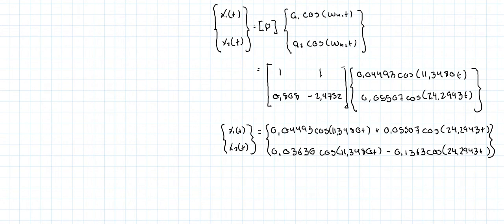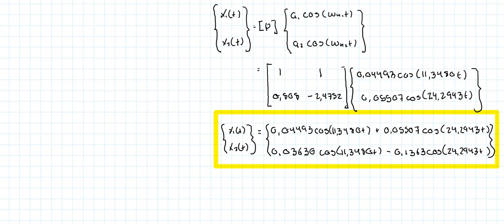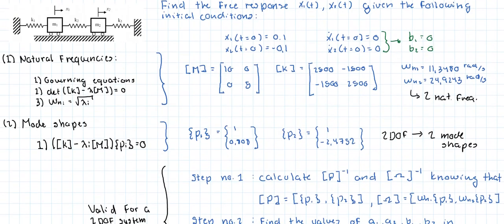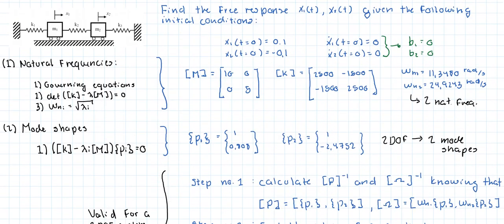And that is our answer. Notice that the free response is simply equal to the linear sum of the cosine of the first natural frequency and the second natural frequency — so it's just a combination of both. If you want to have this worksheet as a PDF, there's a link in the description below. Thanks for watching.